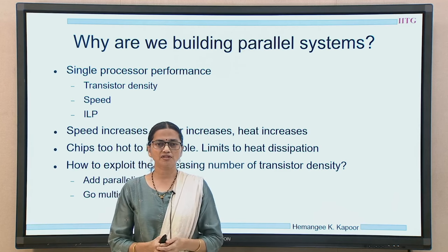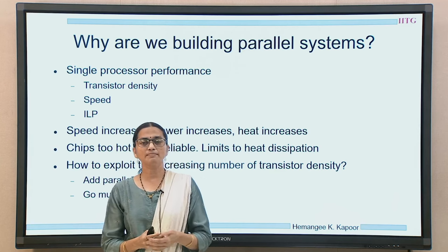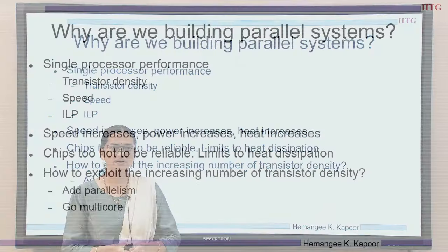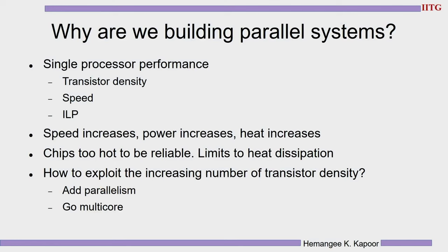The previous two lectures we have been studying the requirement of having parallel systems. We used to have a single processor and its performance increased with the increase in the number of transistors, more logic, improvement in the ISA, more memory and caches. Single processor performance increased, transistor density increased, speed and clock frequency increased, and we were also able to exploit ILP — instruction level parallelism.